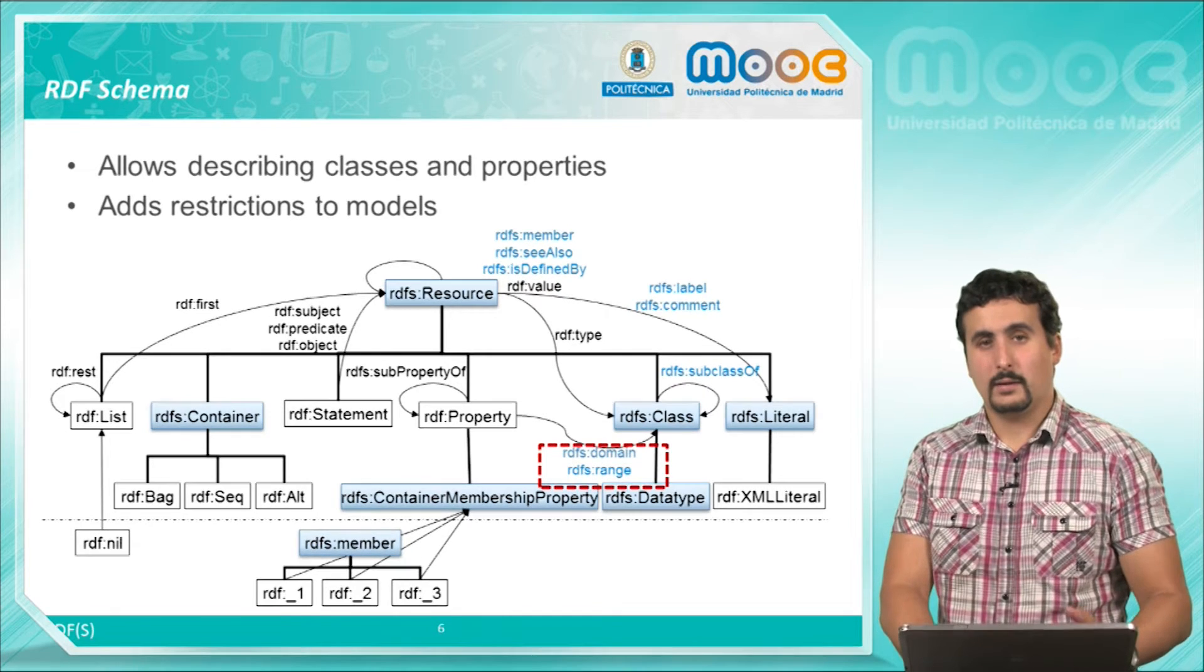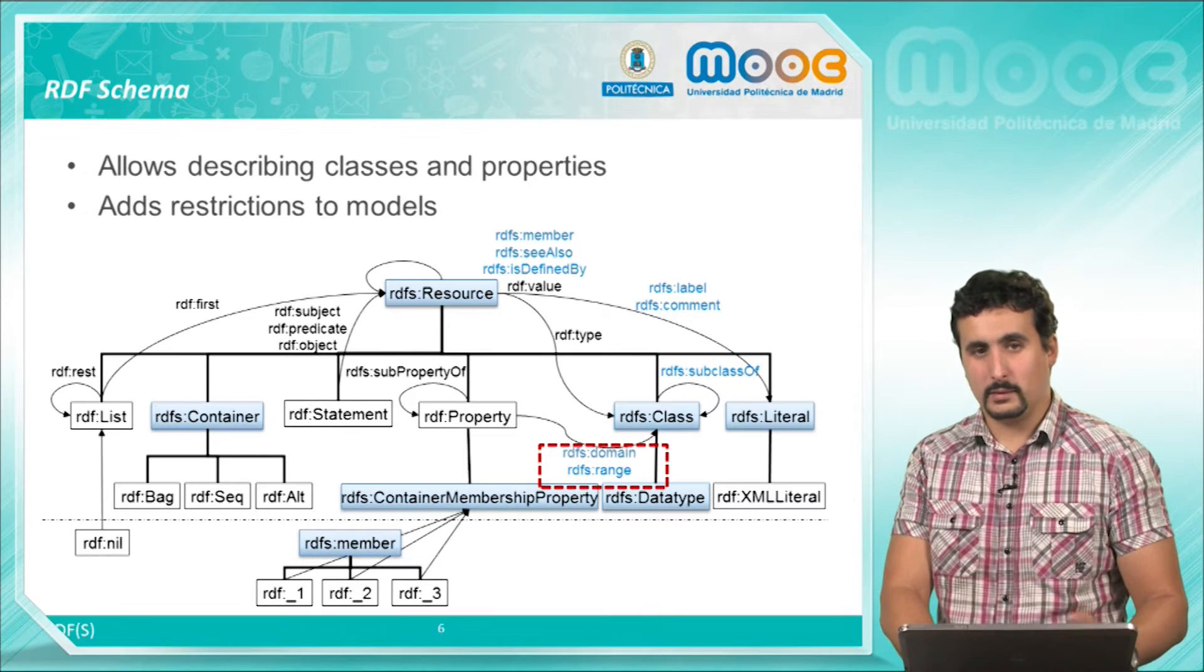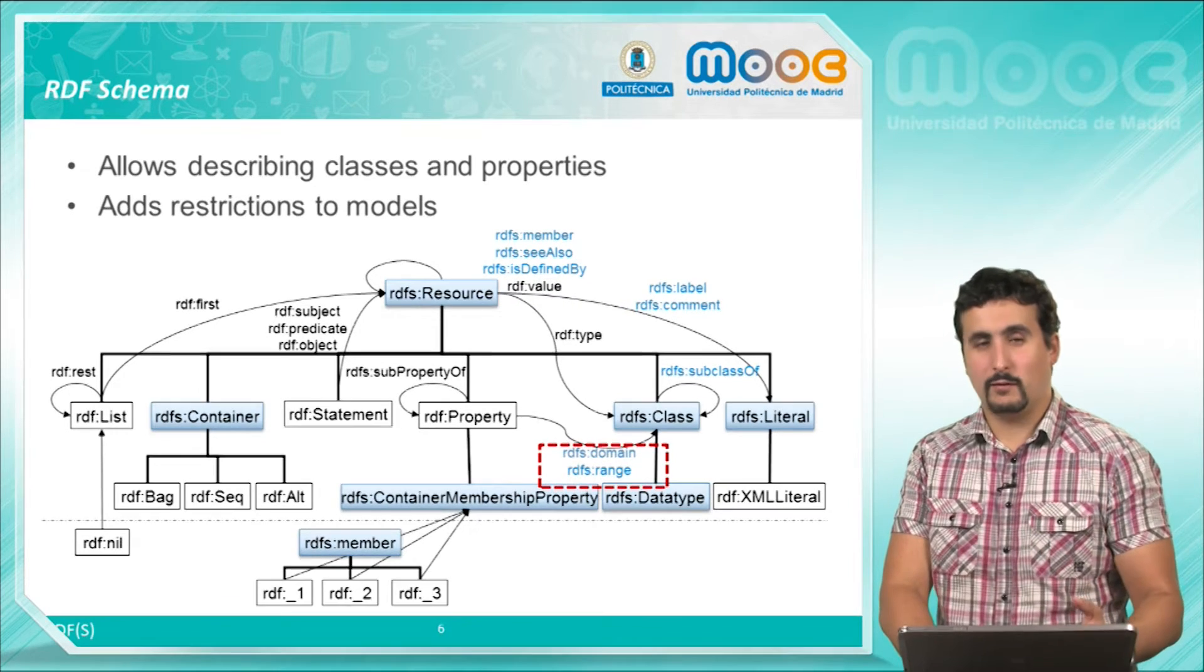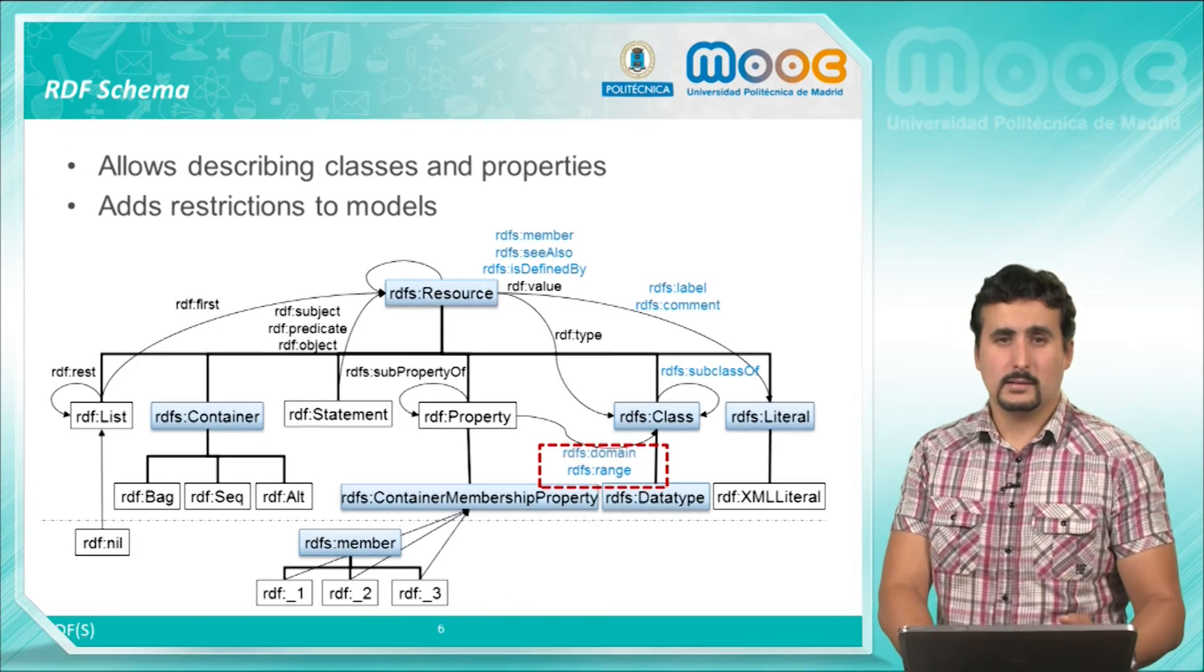We also have the domain and range properties. These properties define which are the origin and target values of a property. We will explain this in the coming example.